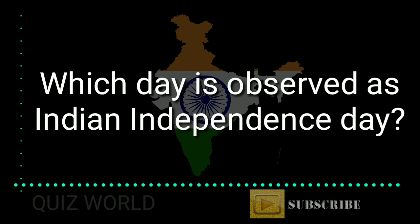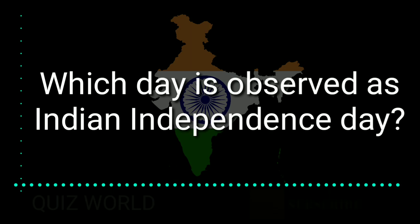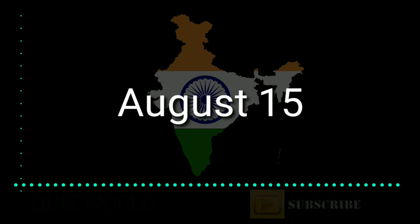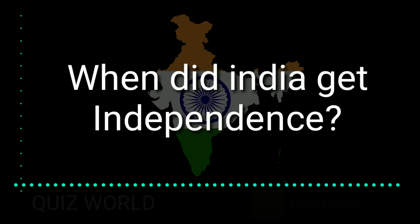Which day is observed as Indian Independence Day? Answer is August 15th. August 15th is observed as Indian Independence Day.